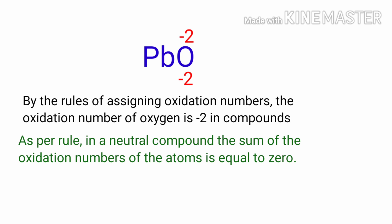As per rule, in a neutral compound, the sum of the oxidation numbers of the atoms is equal to 0. So, the numbers along the bottom must add up to 0. Therefore, the number under Pb must be plus 2.